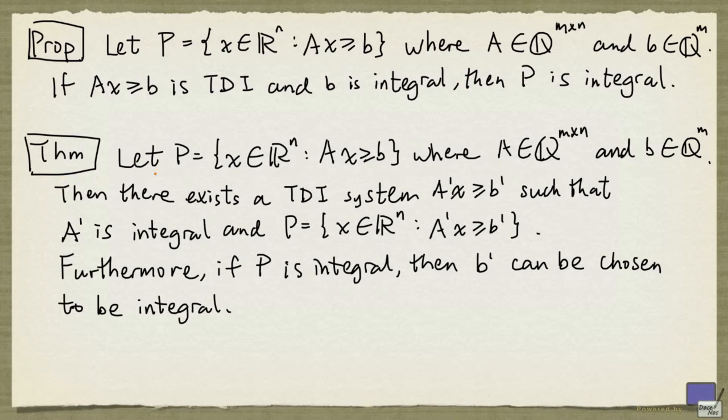And the second result states the following: If P is as before, then you can actually find a TDI system A prime x greater than or equal to b prime that defines P, with A prime having only integer entries. Furthermore, if P is integral, you can choose b prime to have only integer entries as well.